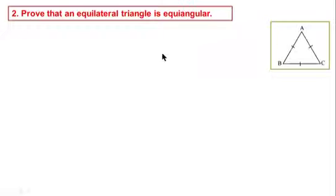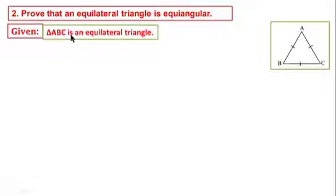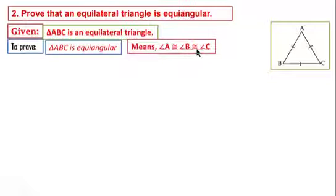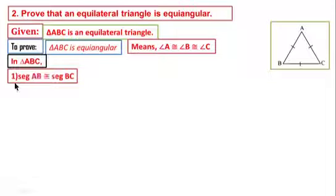To prove that an equilateral triangle is equiangular. See this figure. Given: Triangle ABC is an equilateral triangle. To prove: Triangle ABC is equiangular, meaning angle A is congruent to angle B is congruent to angle C. In triangle ABC, statement 1: Segment AB is congruent to segment BC — sides of an equilateral triangle.